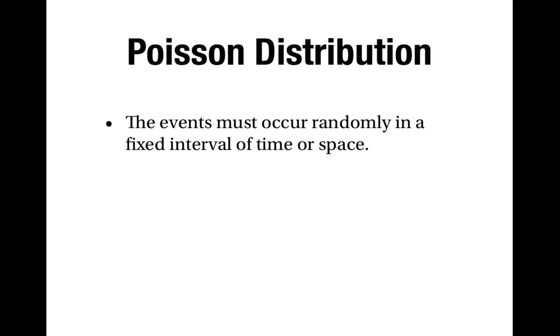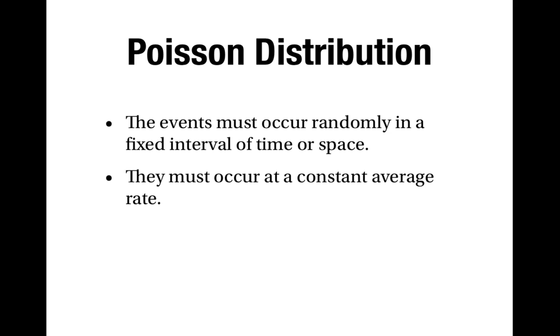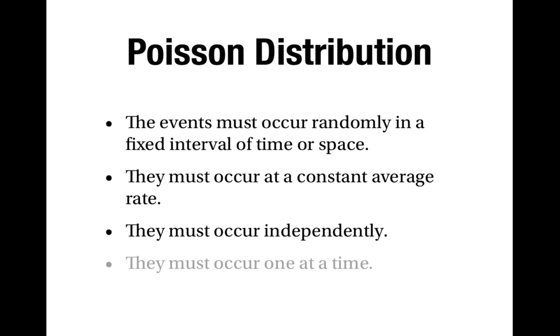So you need to remember the criteria for using the Poisson distribution. The first is that the events must occur randomly in a fixed interval of time or space. The second is that they must occur at a constant average rate — and you need to remember what that means. Thirdly, they must occur independently. And finally, they must occur one at a time. I hope you found this video useful. Thank you for watching.